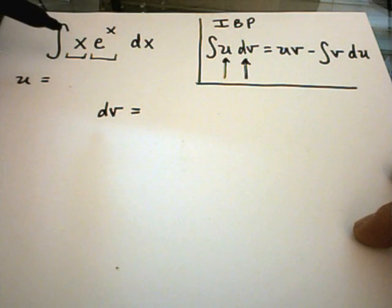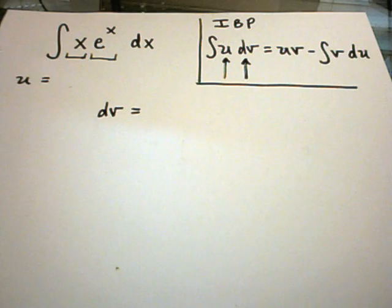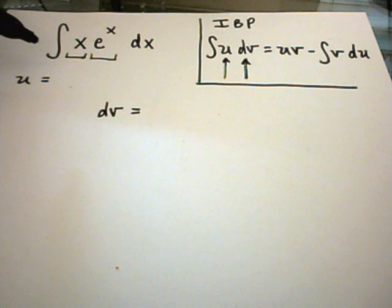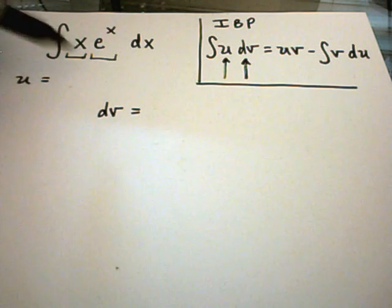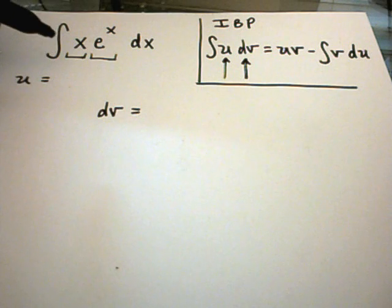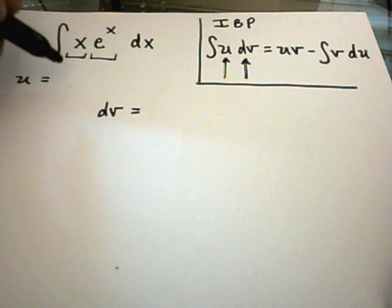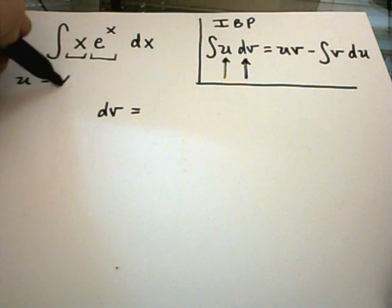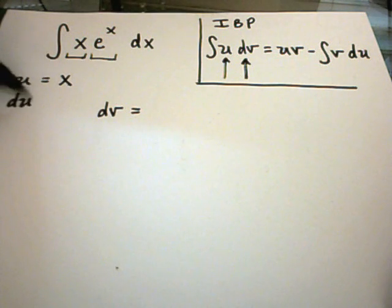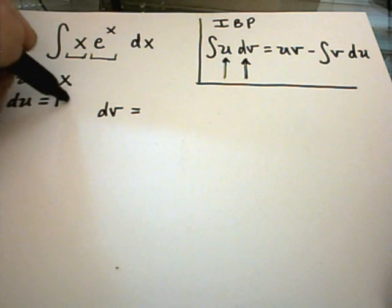As a general rule of thumb, you'll pick u to be the thing that gets simpler when you take the derivative of it. If I let u equal x, the derivative of that will be one. If I let u be e to the x, the derivative is just e to the x, which doesn't get any better. So I'm going to let u equal x, and from that I'll get du equals one dx.